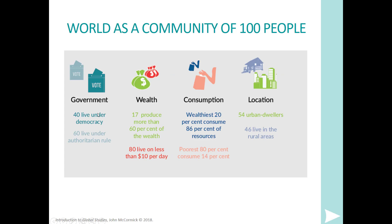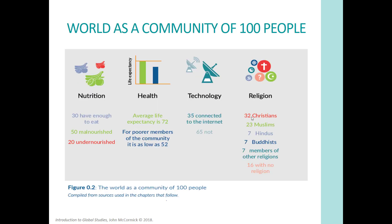Politically, 40% live under democracy and 60% live under authoritarian rule. 17% produce more than 60% of the world's wealth, and 80% live on less than $10 a day. The wealthiest 20% consume 86% of the resources — mainly Europe and North America — while the poorest 80% consume only 14%. On location, while historically most people lived in rural areas, now 54% live in urban areas.